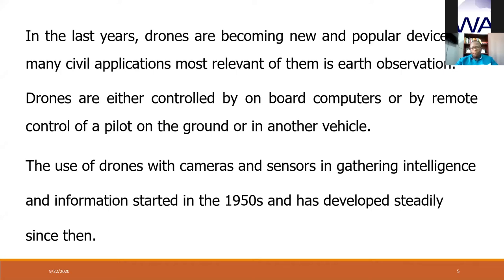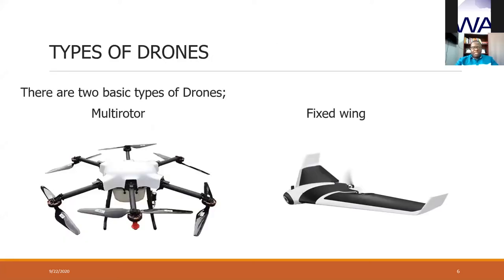In recent years, drones are becoming popular devices for several applications, most relevant of which is observation. Drones are either controlled by on-board computers or by remote control from a pilot in another vehicle, such as a command center or control room. The use of drones with cameras and sensors in gathering intelligence and information started in the 1950s and has developed steadily since then. There are two basic types of drones: the multi-rotor drone and the fixed-wing drone.